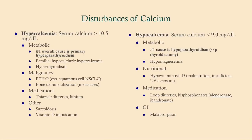Now let's look at disturbances of calcium. Hypercalcemia is more commonly tested than hypocalcemia. The number one cause of hypercalcemia is primary hyperparathyroidism, most often due to an adenoma — an autonomous secretor of PTH arising from the parathyroid gland.